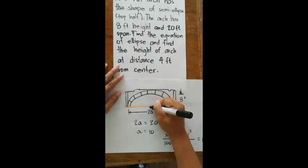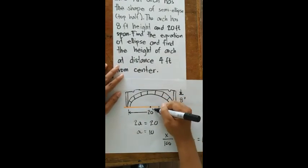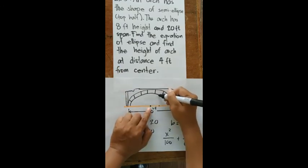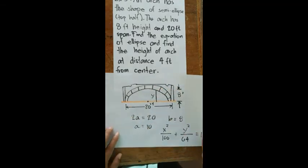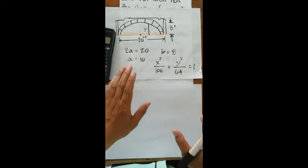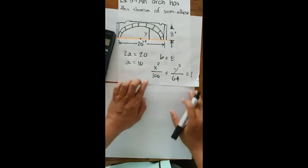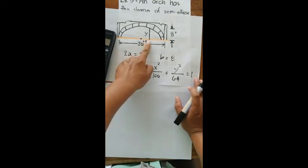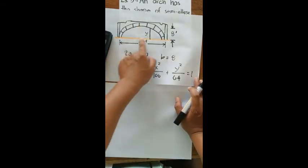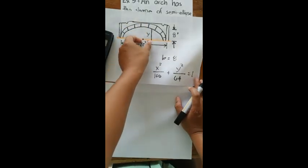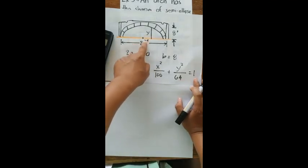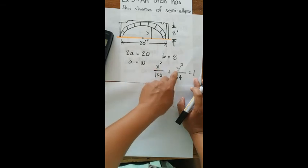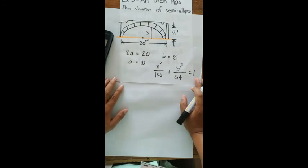We still need to find the height of the arch at 4 feet from the center. Since we move 4 feet along the x-axis from the center, we substitute x = 4 into the equation. This will give us the y value, which represents the height of the arch at that point.